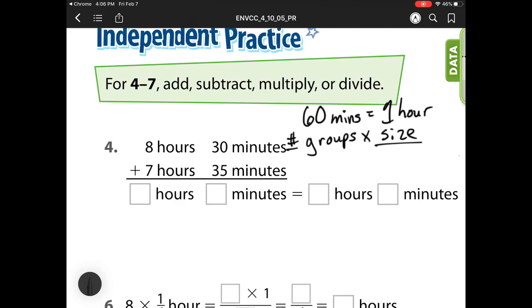So here we have 30 plus 35 is 65 minutes, and 8 plus 7 is 15 hours, but notice here I have 65 minutes, and I only need 60 to make 1 hour. So I'm going to take away a group of 60 here and trade that one group of 60 for 1 hour. So 1 hour plus 15 is equal to 16 hours, and here I have 65, which I took away 60 minutes, which leaves me with 5 minutes.